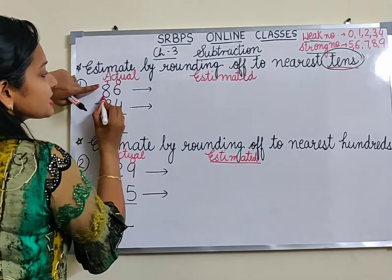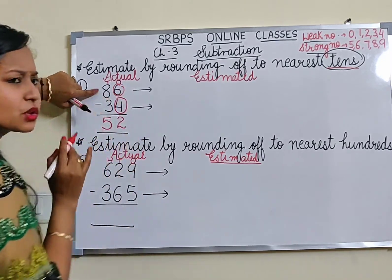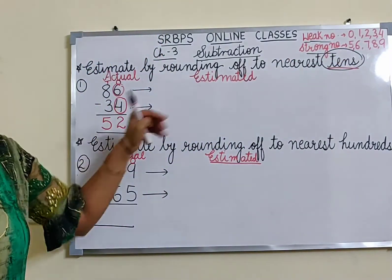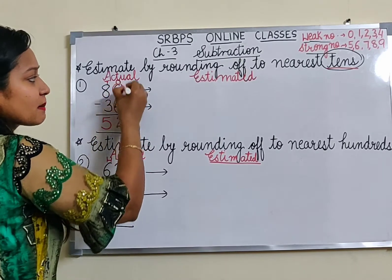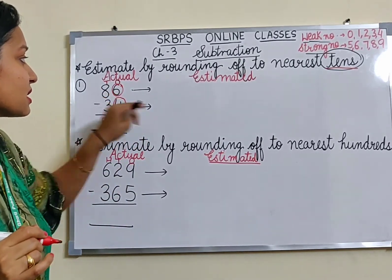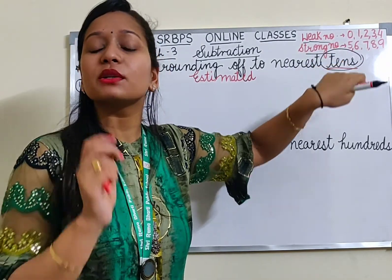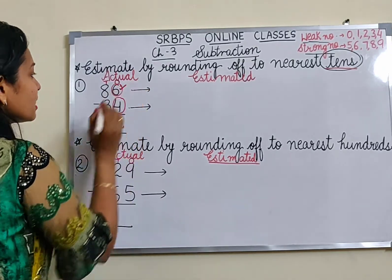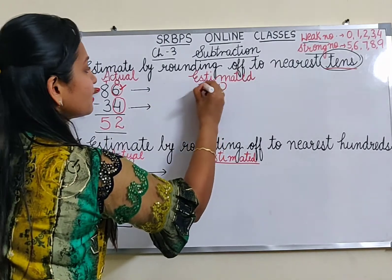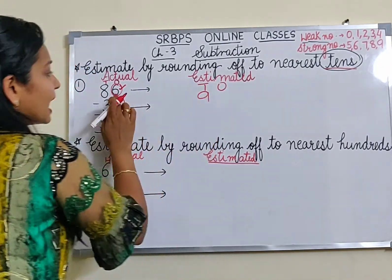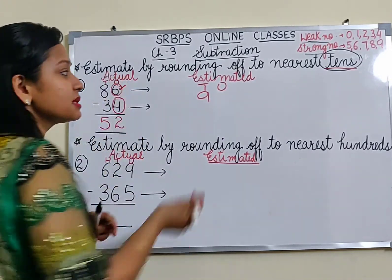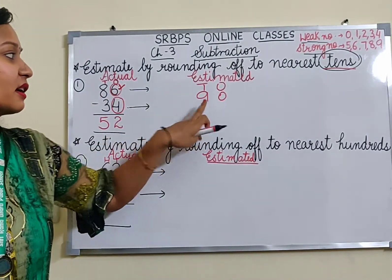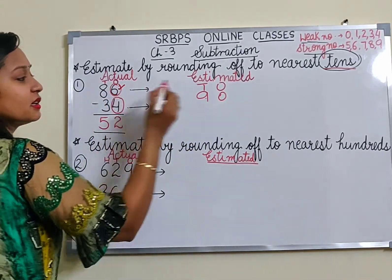The first rule is to check the number inside the circle. The number inside the circle is 6, and 6 comes in the strong number list. Since it is a strong number, it will add 1 to the number before it. So 8 will become 9 and the circle number will become 0. So 86 rounds off to 90.